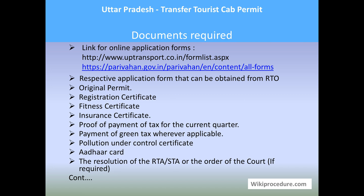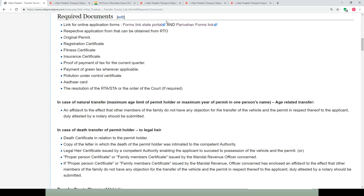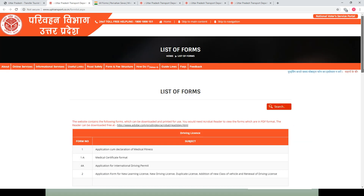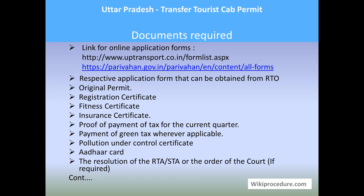For documents required, in our wikiprocedure page under the required documents section we have provided a link which will take you to the state portal as well as the Parivahan forms page, from where you can download the respective application form. The basic documents required are: original permit, registration certificate, fitness certificate, insurance certificate, proof of payment of tax for the current quarter, payment of green tax wherever applicable, pollution under control certificate, the other card, and the resolution of the RTA/STA or order of the court if required.